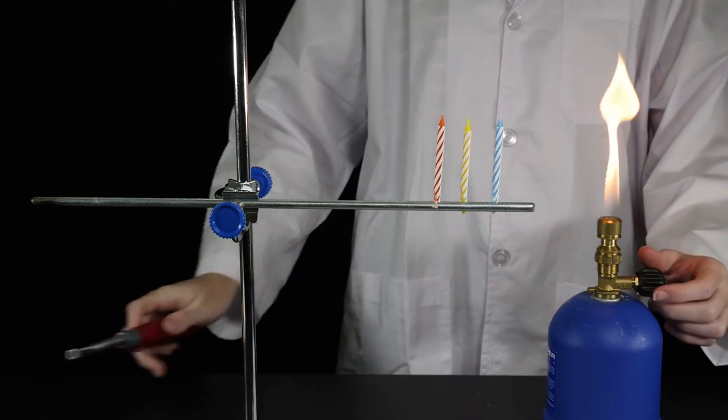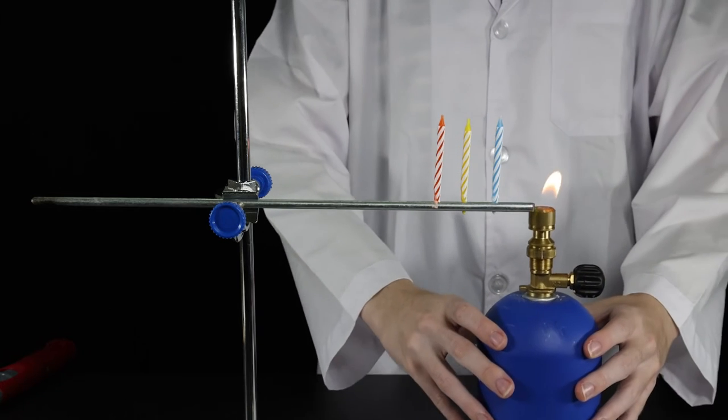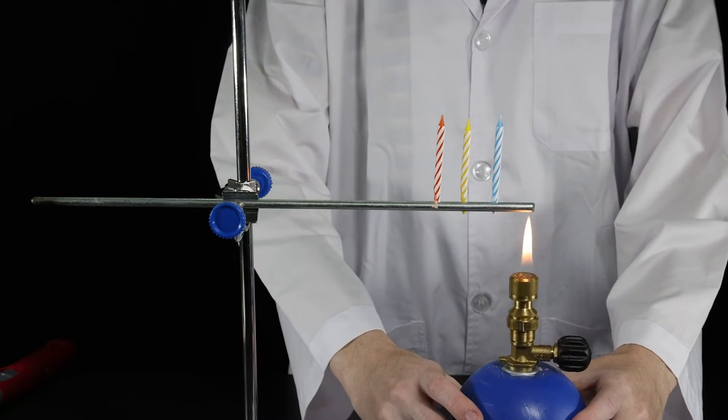When the burner is lit, heat moves along the metal from hot to cold. In this case, from right to left.